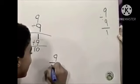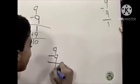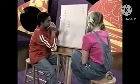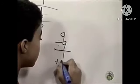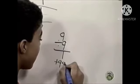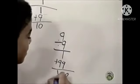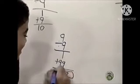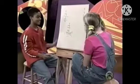Nine divided by nine equals one. And then if you put the two nines together — plus ninety-nine — equals one hundred! Oh my gosh! Yahoo!